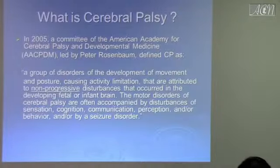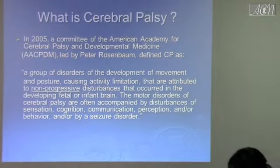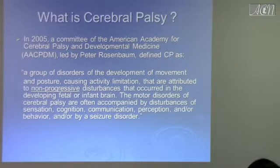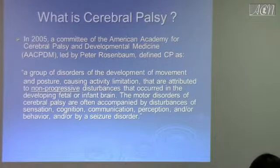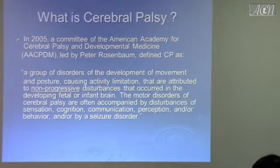We're going to talk today about cerebral palsy. The first thing we're going to start with is: what is cerebral palsy? In 2005, a committee of the American Academy of Cerebral Palsy and Developmental Medicine (AACPDM), led by Peter Rosenbaum, defined CP as a group of disorders — so it is not one entity — of the development of movement and posture, causing activity limitation attributed to non-progressive disturbances occurring in the development of the fetal or infant brain. It is non-progressive; if it is getting progressively worse, it is not CP.